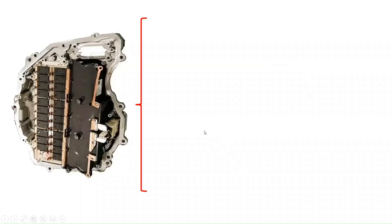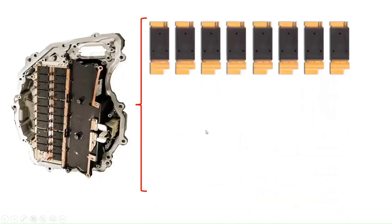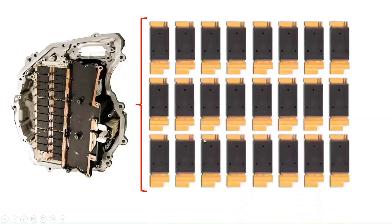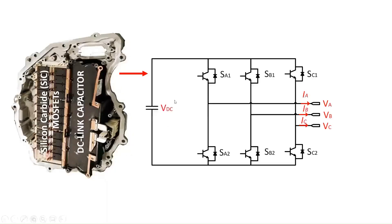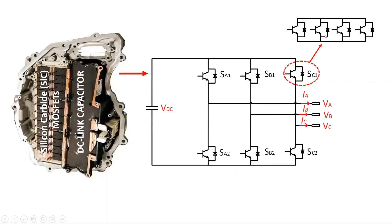Tesla Model Y inverter consists of 24 silicon carbide MOSFETs rated at 650 volts. The Tesla Model Y uses a three-phase, two-level inverter topology with an input battery voltage of 400 volts. This topology consists of a DC-link voltage and six switching power semiconductor devices, with a conventional two-level inverter structure using four MOSFETs paralleled per switching device to handle the high current.